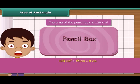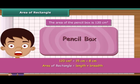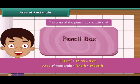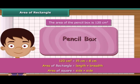So we can generalize that the area of any rectangle is obtained by multiplying its length and breadth. Since a square is a rectangle whose length and breadth are equal, the area of a square is obtained by multiplying its side by its side.